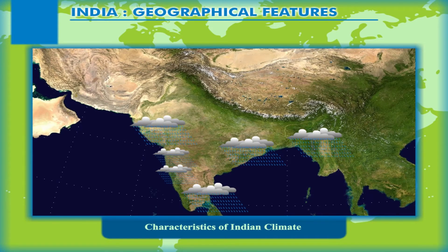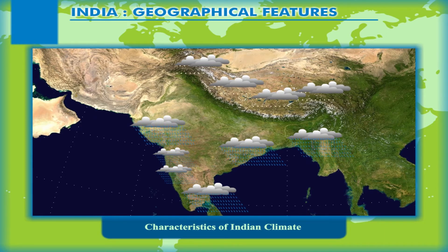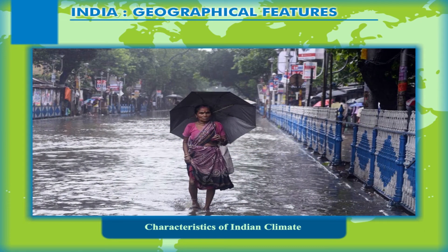Precipitation and Rainfall Contrast. Precipitation is mostly in the form of rainfall all over India, but some high-altitude areas, especially in the north mountain region, experience precipitation in the form of snowfall, especially during winters.